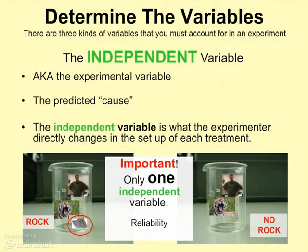We have to have only one independent variable, because if anything else is different between the two treatments — for example, if the tigers in the rock beaker were all fed very well and the tigers in the no-rock beaker were not fed very well — now we have two things that are different between each treatment: how much the tigers were fed and the presence of a rock. That means we can't rely on the results. So we can only have one independent variable.